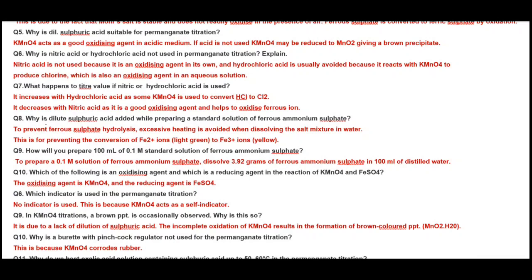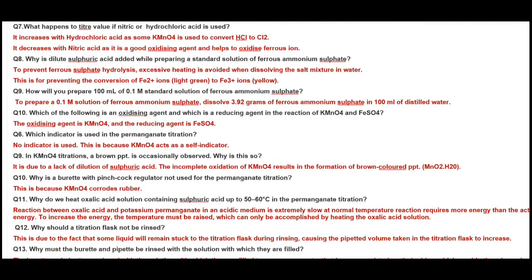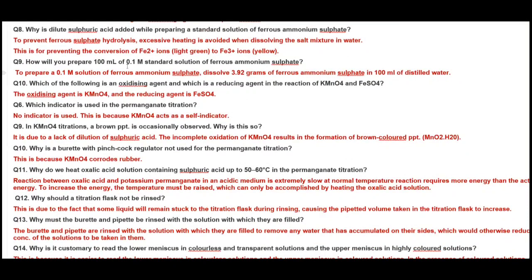Why is dilute sulfuric acid added while preparing a standard solution of ferrous ammonium sulfate? To prevent hydrolysis of ferrous sulfate and also to prevent oxidation of ferrous to ferric ions. How will you prepare 100 ml of 0.1 molar standard solution? You can use the formula of molarity to calculate this. If you dissolve 3.92 grams of Mohr salt in 100 ml of distilled water you get 0.1 molar solution. Molecular mass of ferrous ammonium sulfate, that is Mohr salt, is 392.